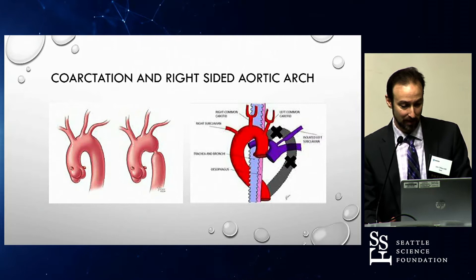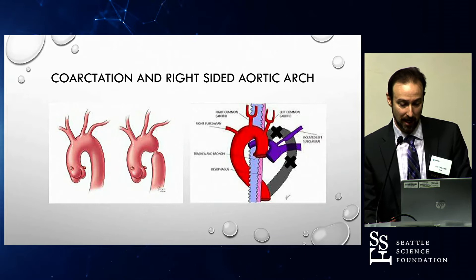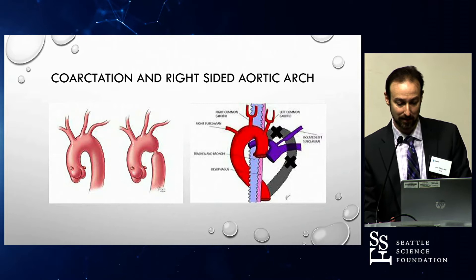Right-sided aortic arch, shown on the right, demonstrates the aorta coursing to the right instead of to the left. It's actually more common than people think — about half a percent of people have a right-sided aortic arch. It passes behind the esophagus and trachea and can cause symptoms there.